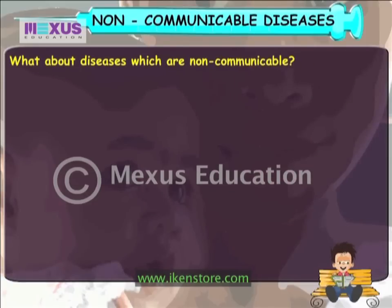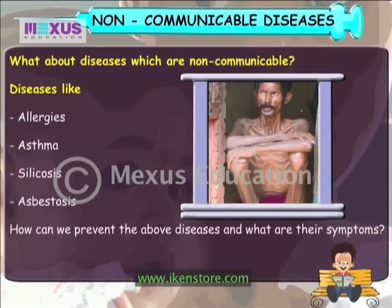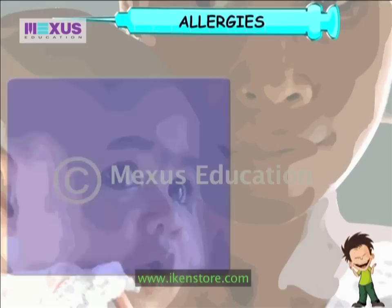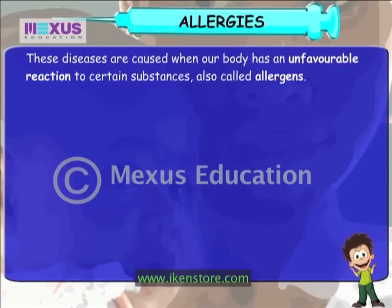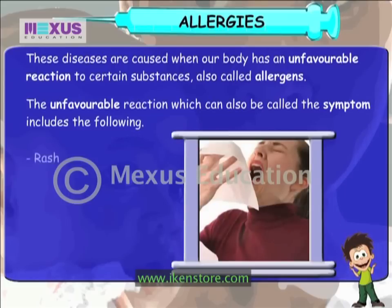What about diseases which are non-communicable? Diseases like allergies, asthma, silicosis and asbestosis. These diseases are caused when our body has an unfavorable reaction to certain substances, also called allergens. The unfavorable reaction, which can also be called the symptom, includes rash, boils, sneezing and swelling.